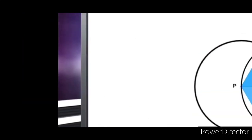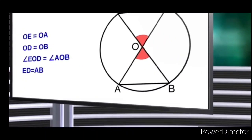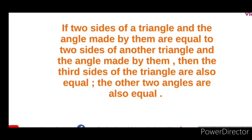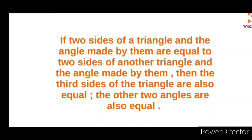Using Q and O, the two sides and the angle made by them are equal to two sides of another triangle and the angle made by them. Then the third sides of the triangle are equal and the other two angles are also equal.